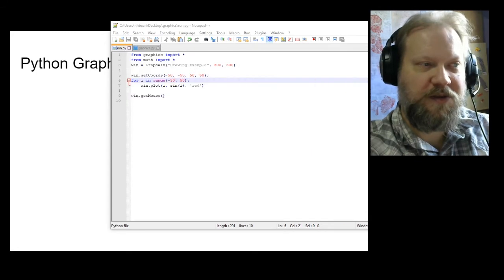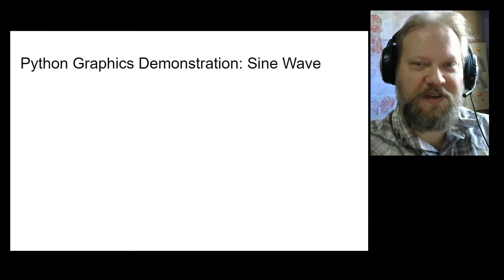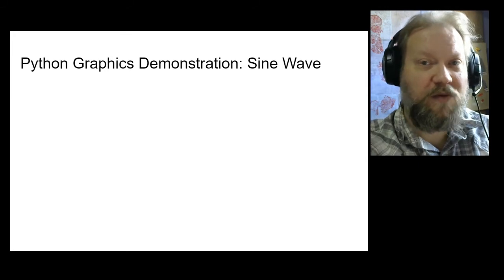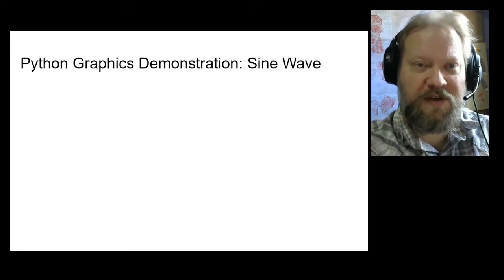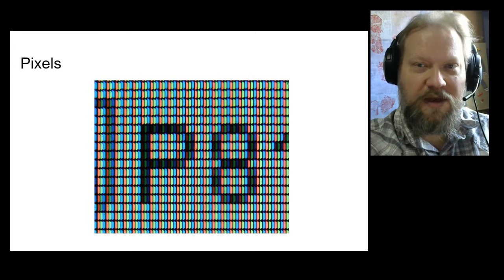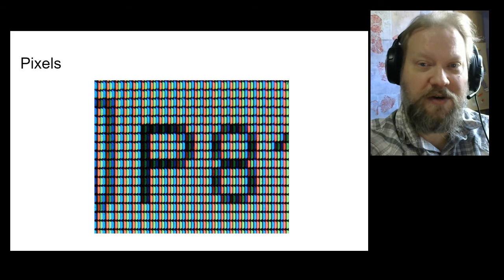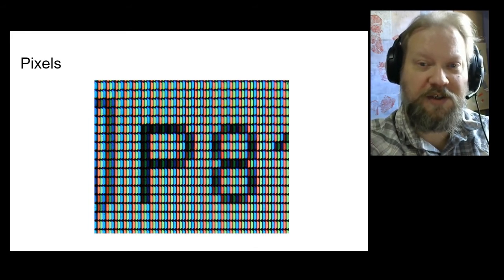This graphics library lets us do pretty much the same things you can do on your graphing calculator and quite a lot more. If you're curious, we'll share this in the show notes — you can go ahead and download and play with that Python graphics library yourself. Now, all computer graphics eventually displayed on screens use pixels, with each pixel composed of a combination of red, green, and blue values.